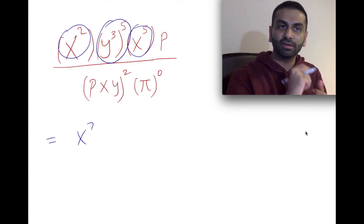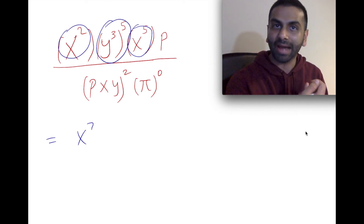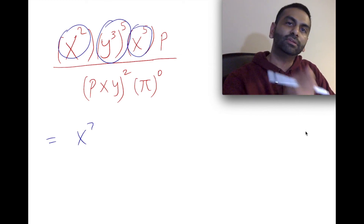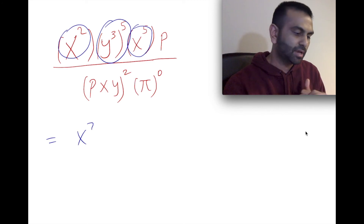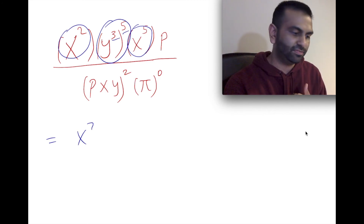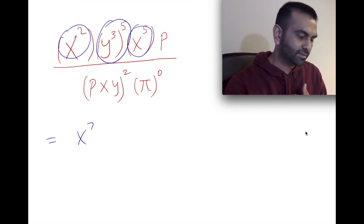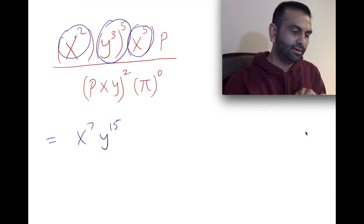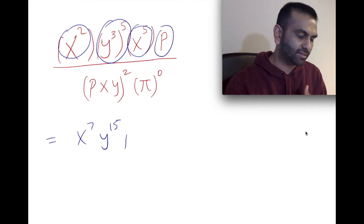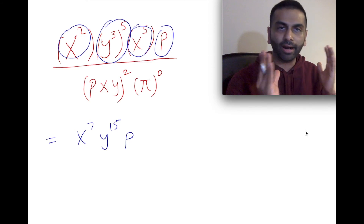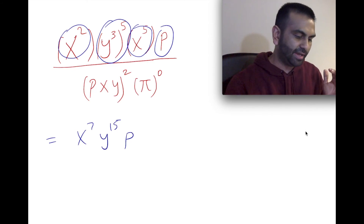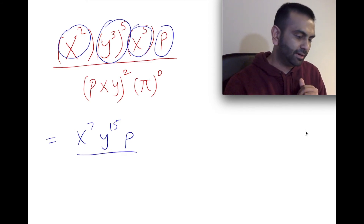Next, y cubed is being taken to a power, so I'm going to multiply: three times five is fifteen, giving y to the fifteenth. Then this p is on its own, so it just stays as p. The numerator is simplified.